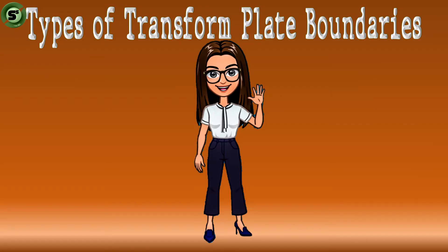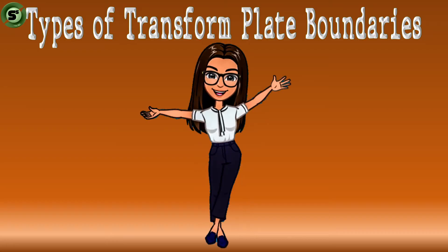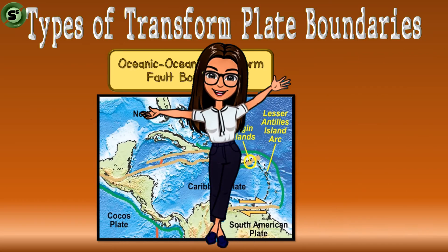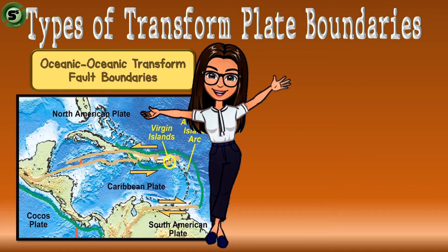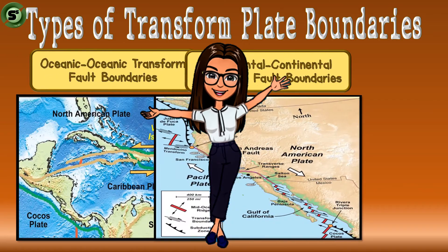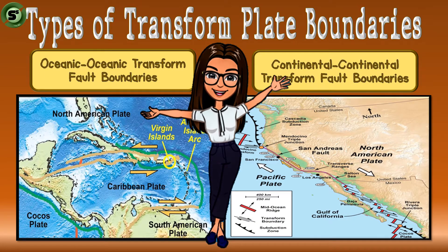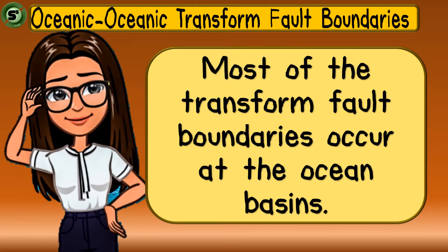There are two types of transform fault boundaries: Oceanic-Oceanic transform fault boundaries and Continental-Continental transform fault boundaries. The majority of the sliding plates are located at the ocean basins, so let's discuss the Oceanic-Oceanic transform fault boundaries first.